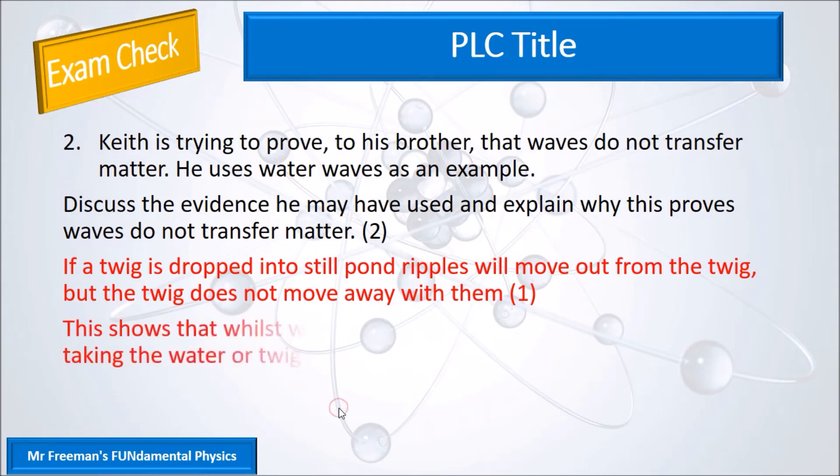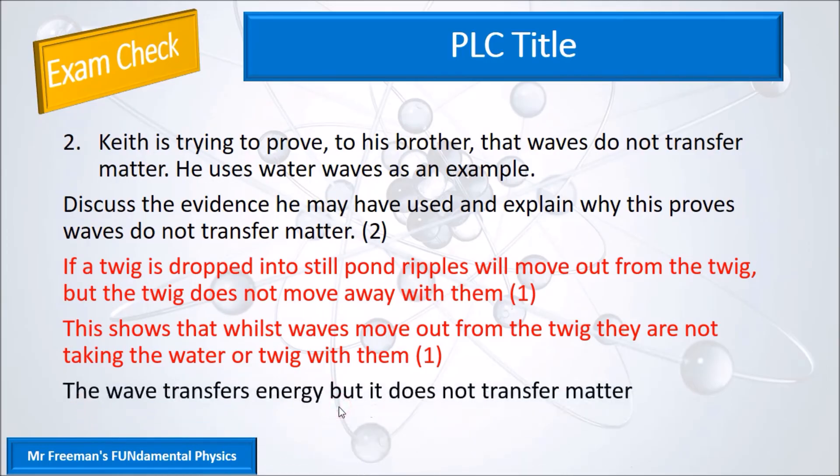The ripples will move out from the twig, but the twig doesn't move away with them. This shows that whilst the waves move out from the twig transferring energy, they do not take the twig with them, which means they do not transfer matter. And just remember: waves transfer energy but not matter.